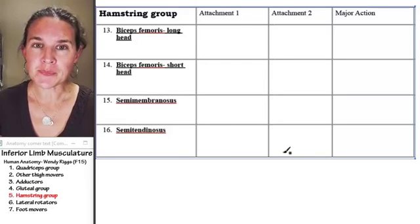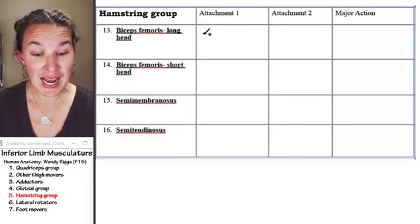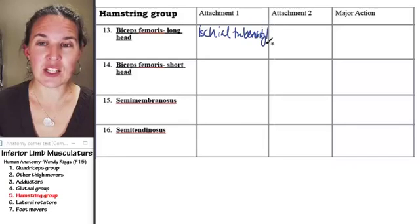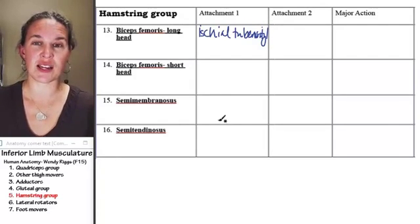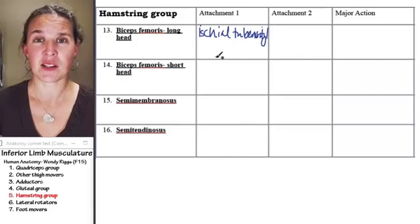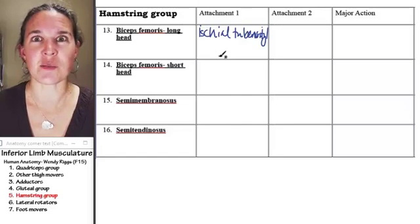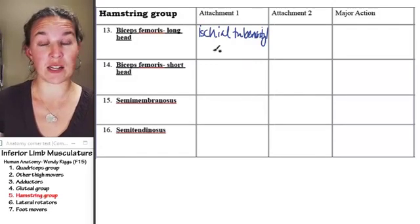First of all, almost all of them, 75% of them attach to the ischial tuberosity. And the ischial tuberosity, remember, is the bone you sit on. So when you sit on somebody's lap and dig your ischial tuberosity into their thigh, into their quadriceps group, that is going to make them very sad, and you probably won't be sitting on their lap for very long.